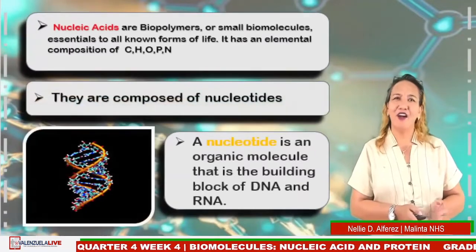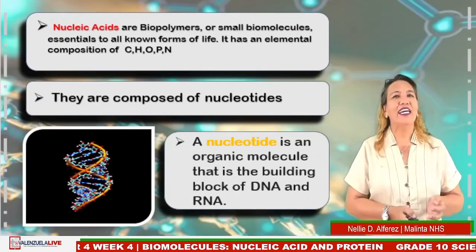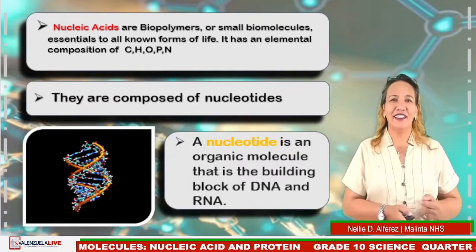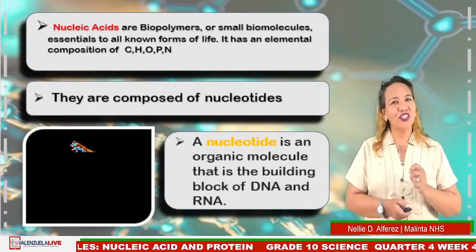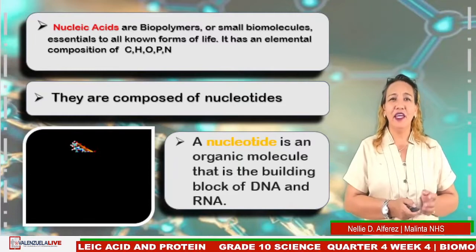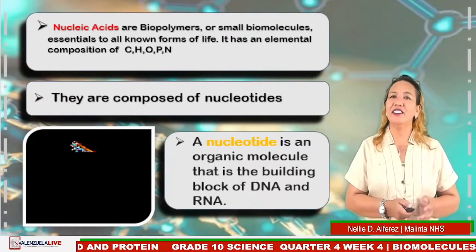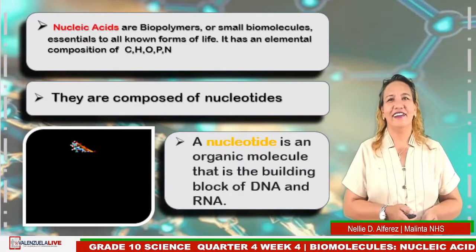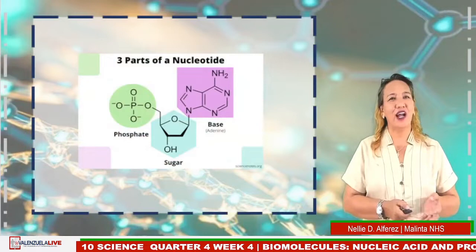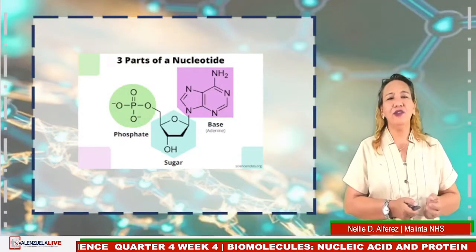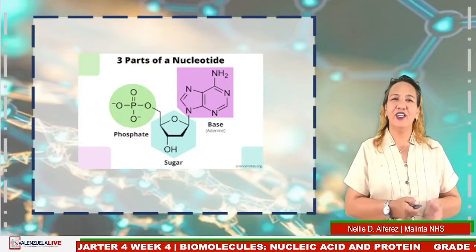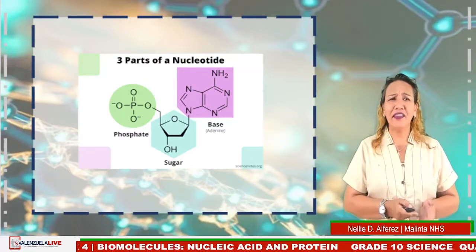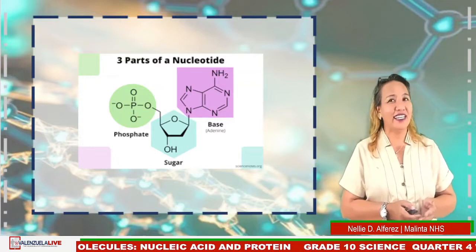Nucleic acids are biopolymers or small biomolecules essential to all known forms of life. The elemental composition of nucleic acids includes carbon, hydrogen, oxygen, nitrogen, and phosphorus. They are composed of nucleotides. A nucleotide is an organic molecule that is the building block of DNA and RNA. Nucleotides contain three components: a nitrogen-containing base, a pentose sugar, and one or more phosphate groups. Let us discuss them one by one.